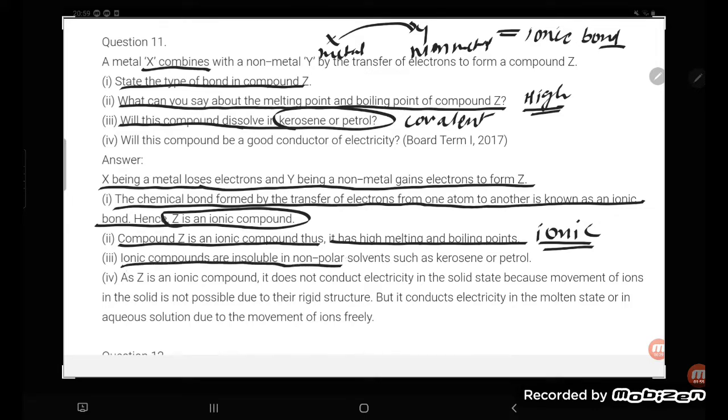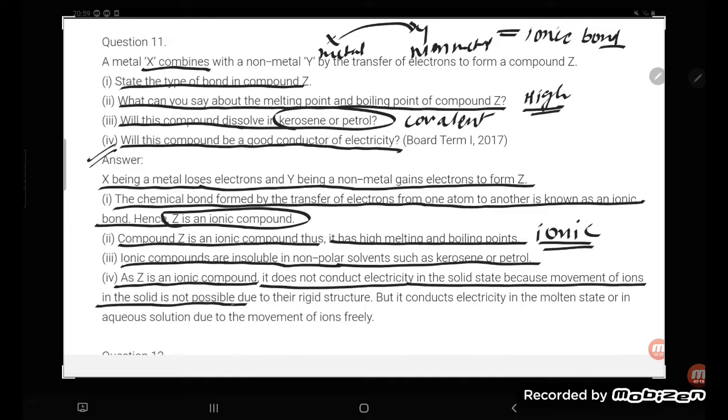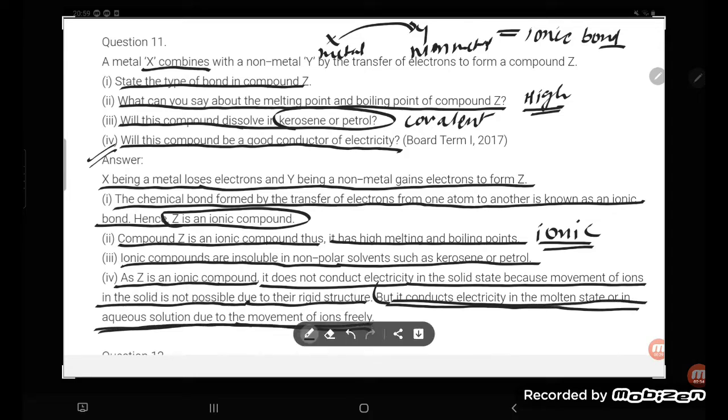Will the compound be a good conductor of electricity? As Z is an ionic compound, it does not conduct electricity in the solid state because movement of ions in the solid is not possible due to their rigid structure. But it conducts electricity in the molten state or in aqueous solution due to the movement of ions freely. So in the molten state it will be a conductor, but in the solid state it is going to be an insulator.